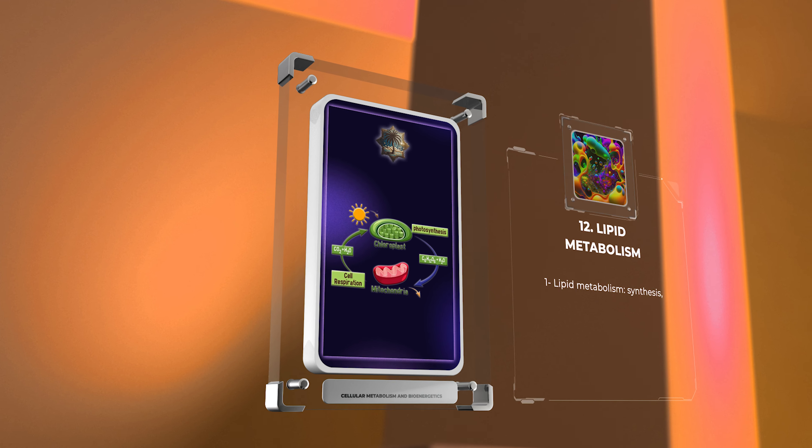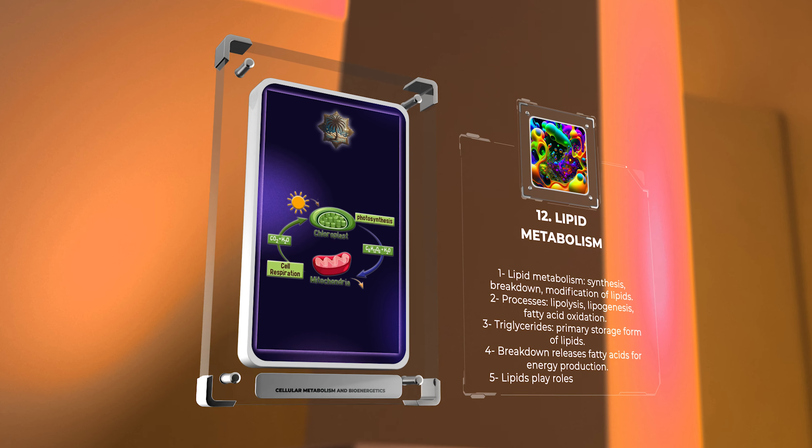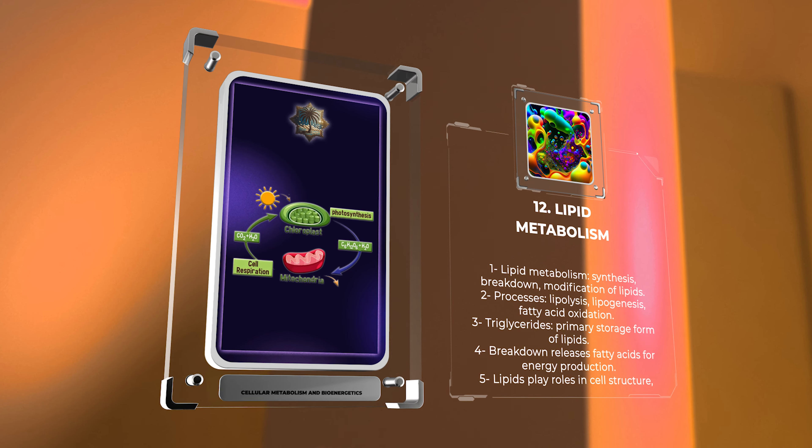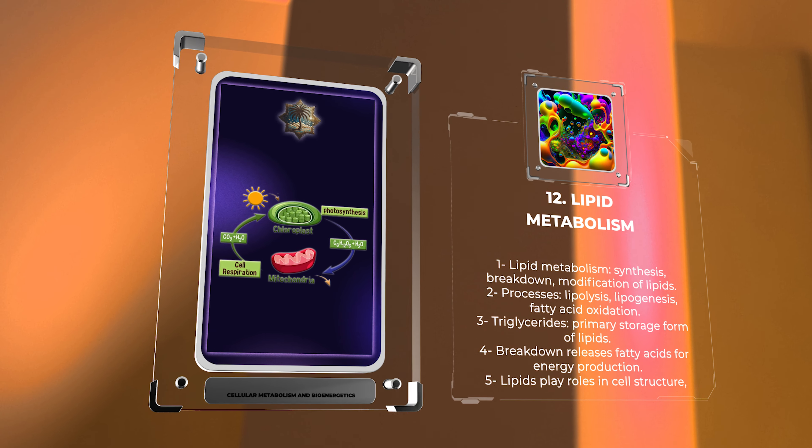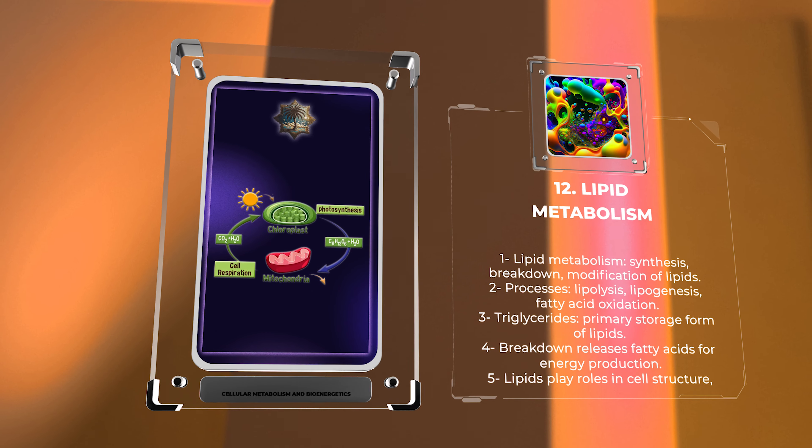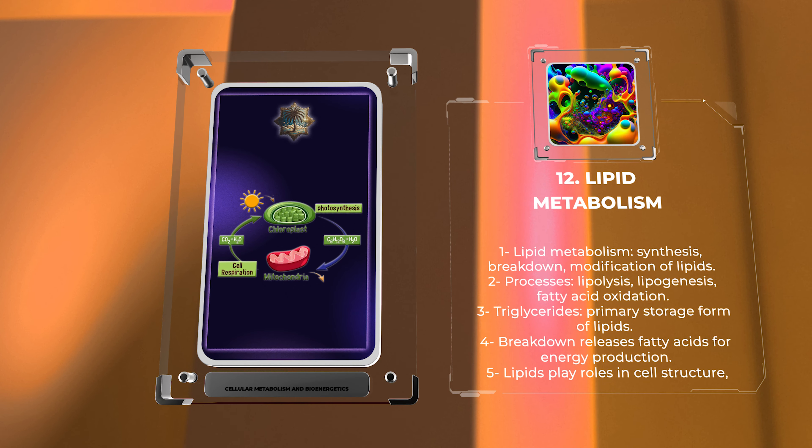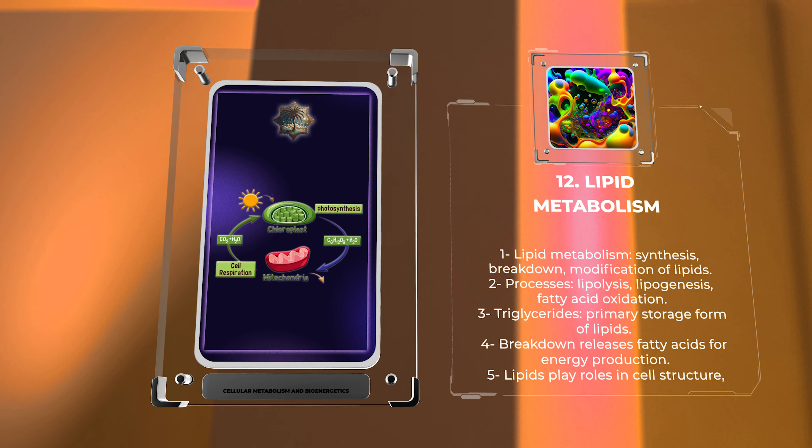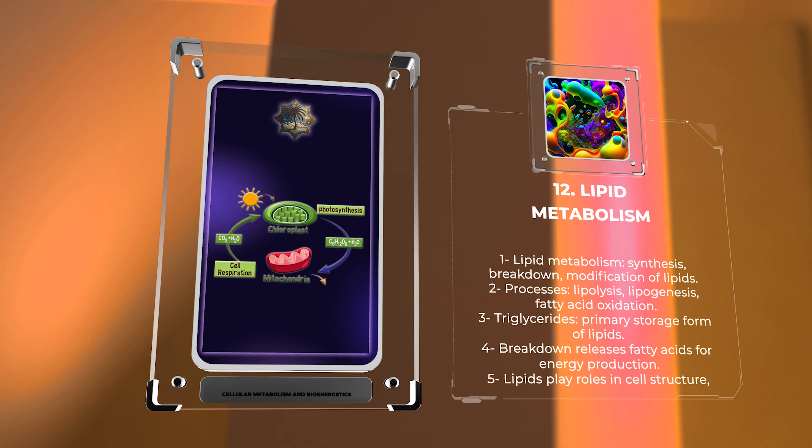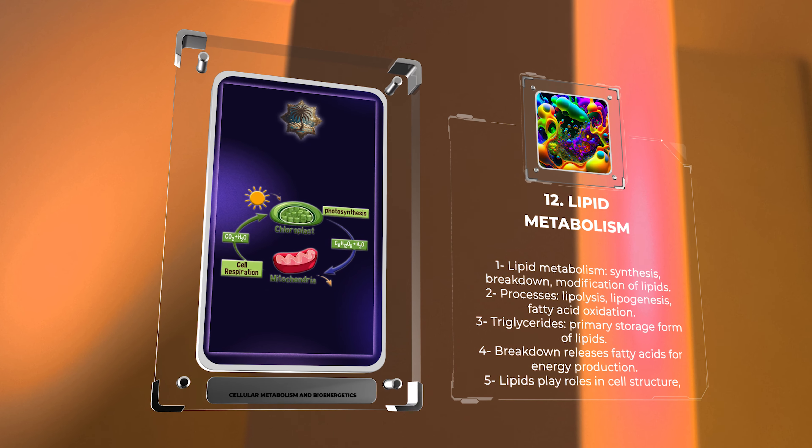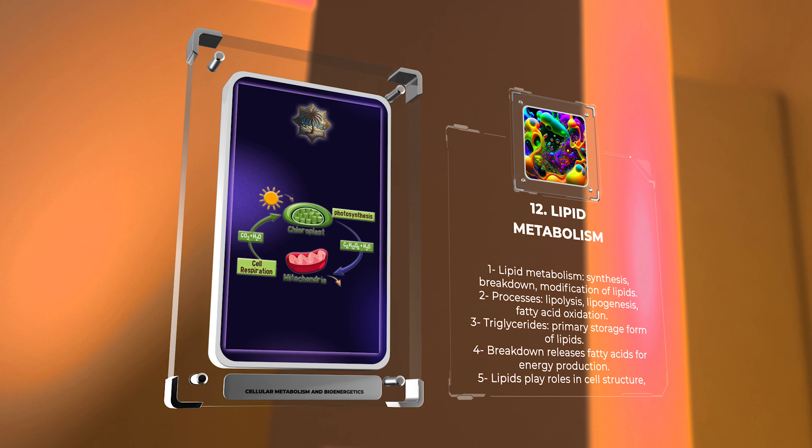Lipid metabolism encompasses the synthesis, breakdown, and modification of lipids in cells. It involves processes like lipolysis, lipogenesis, and fatty acid oxidation. Triglycerides serve as the primary storage form of lipids, and their breakdown releases fatty acids for energy production. Lipids also play vital roles in cell structure, signaling, and insulation.